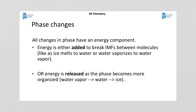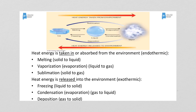Now that we've talked about the different phases of matter and the forces holding different types of substances together, we can talk about changing phases. Either energy is added to break IMFs to separate states, or if states are coming closer together, energy has to be released. Melting and vaporizing require energy to be added; condensation and freezing are exothermic — that extra energy has to be released. There's a good graphic that goes through all the different examples.